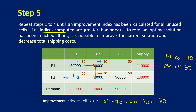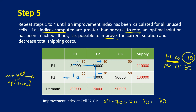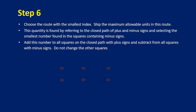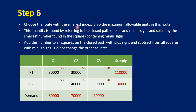If all indices computed are greater than or equal to zero, an optimal solution has been reached. But we still have a negative here, so the solution is not yet optimal. We have to improve the current solution and decrease total shipping costs. The cell whose improvement index is negative is P1-C3. The next step is to choose the route with the smallest index, which is P1-C3.